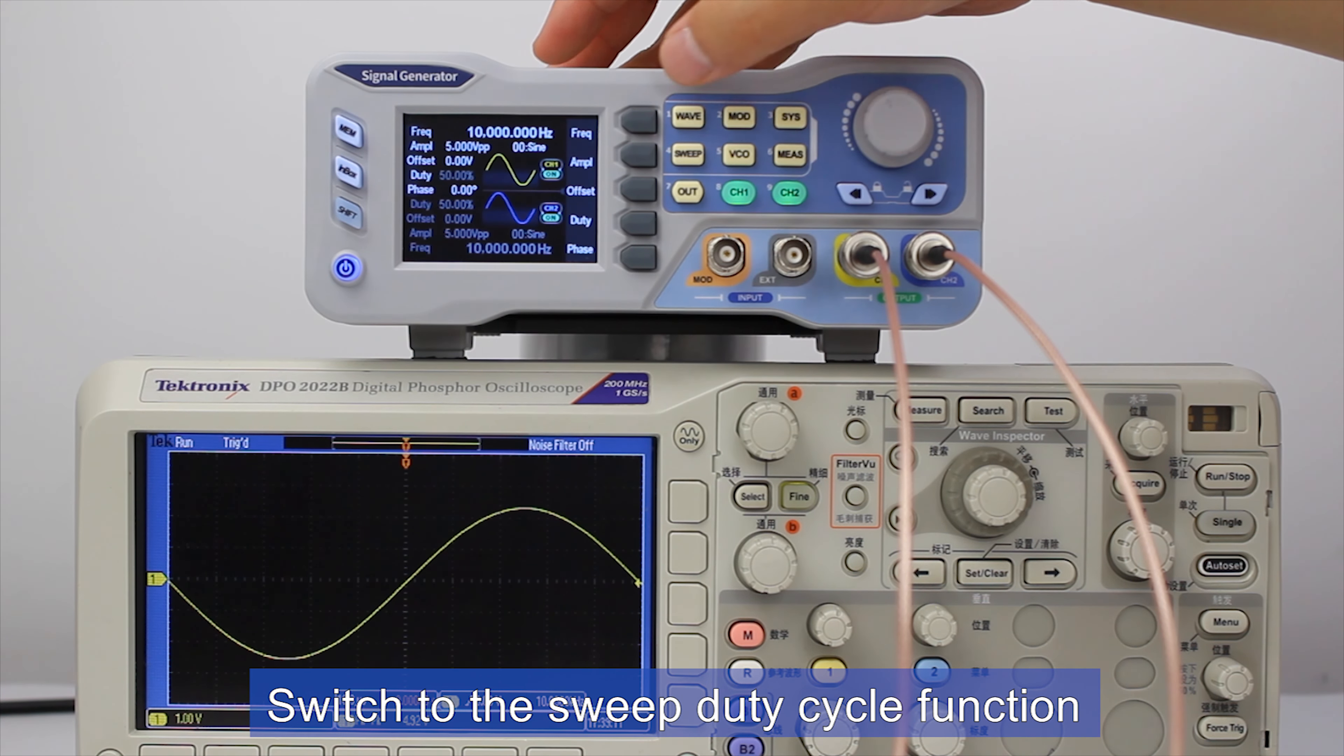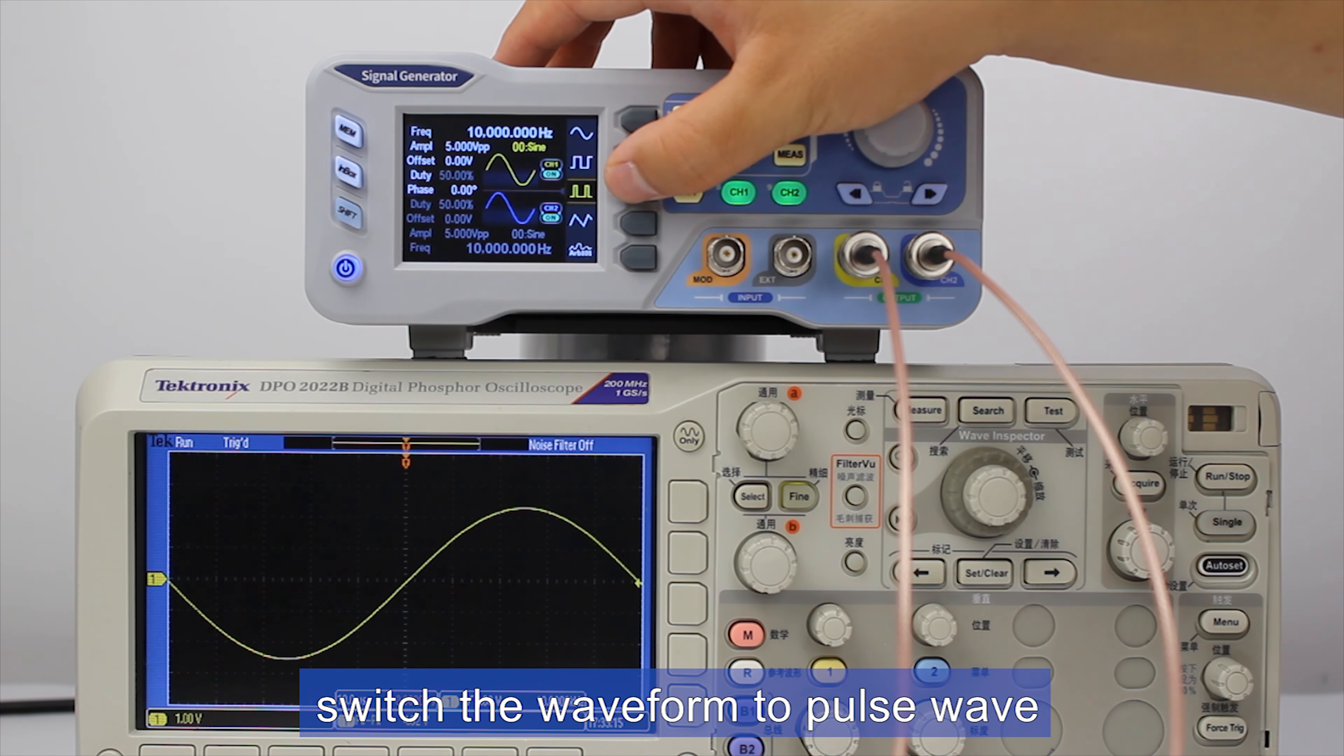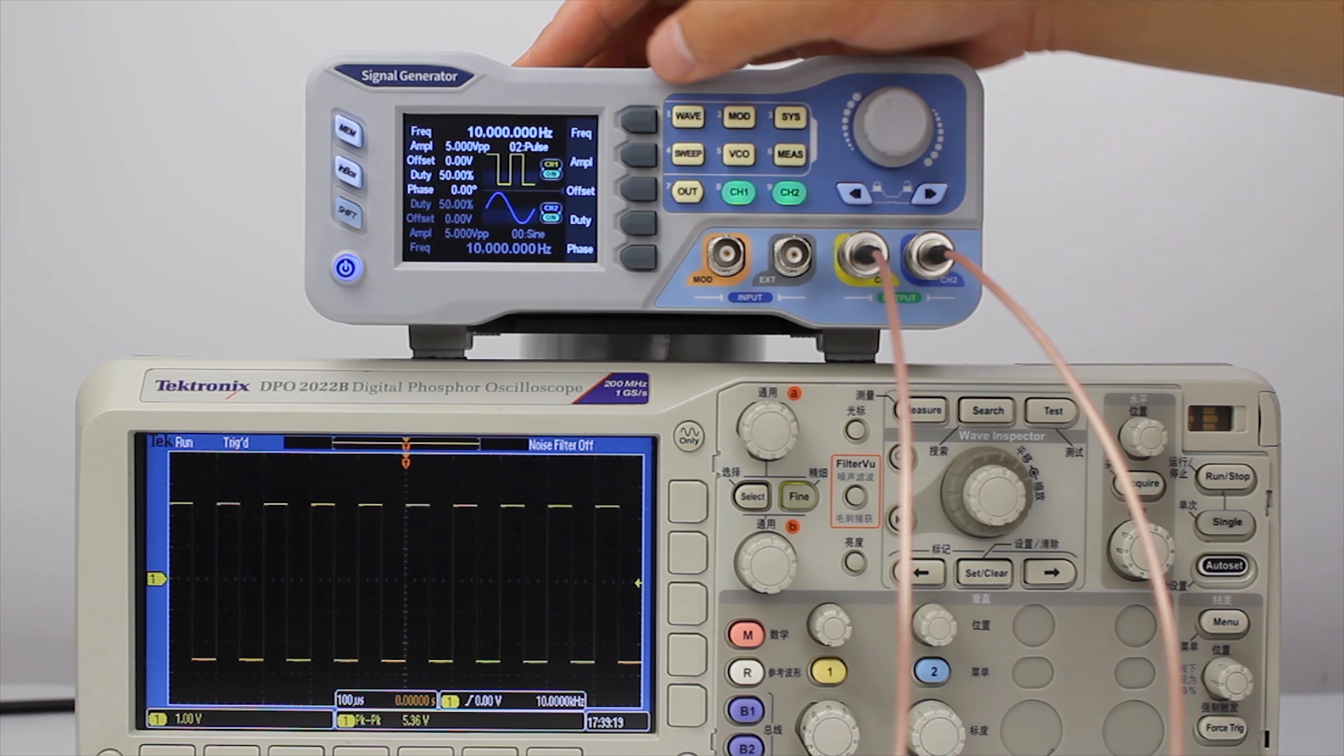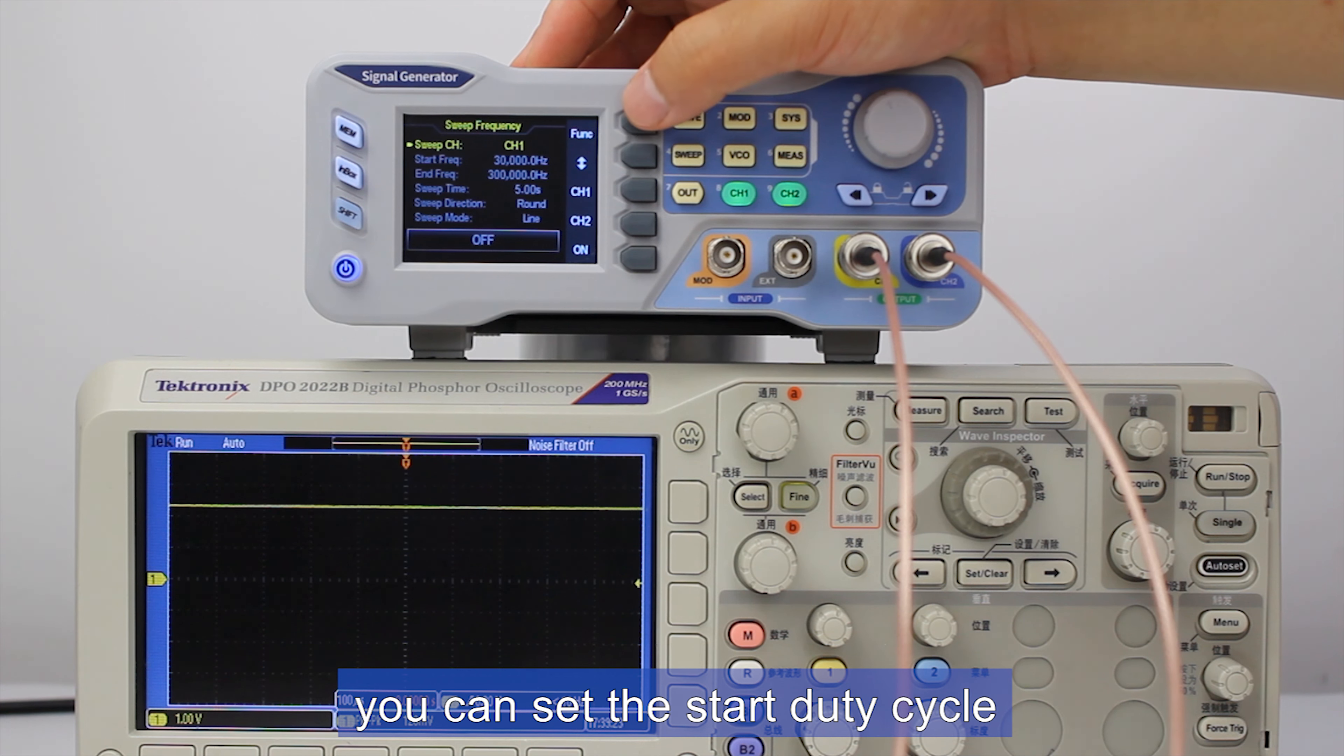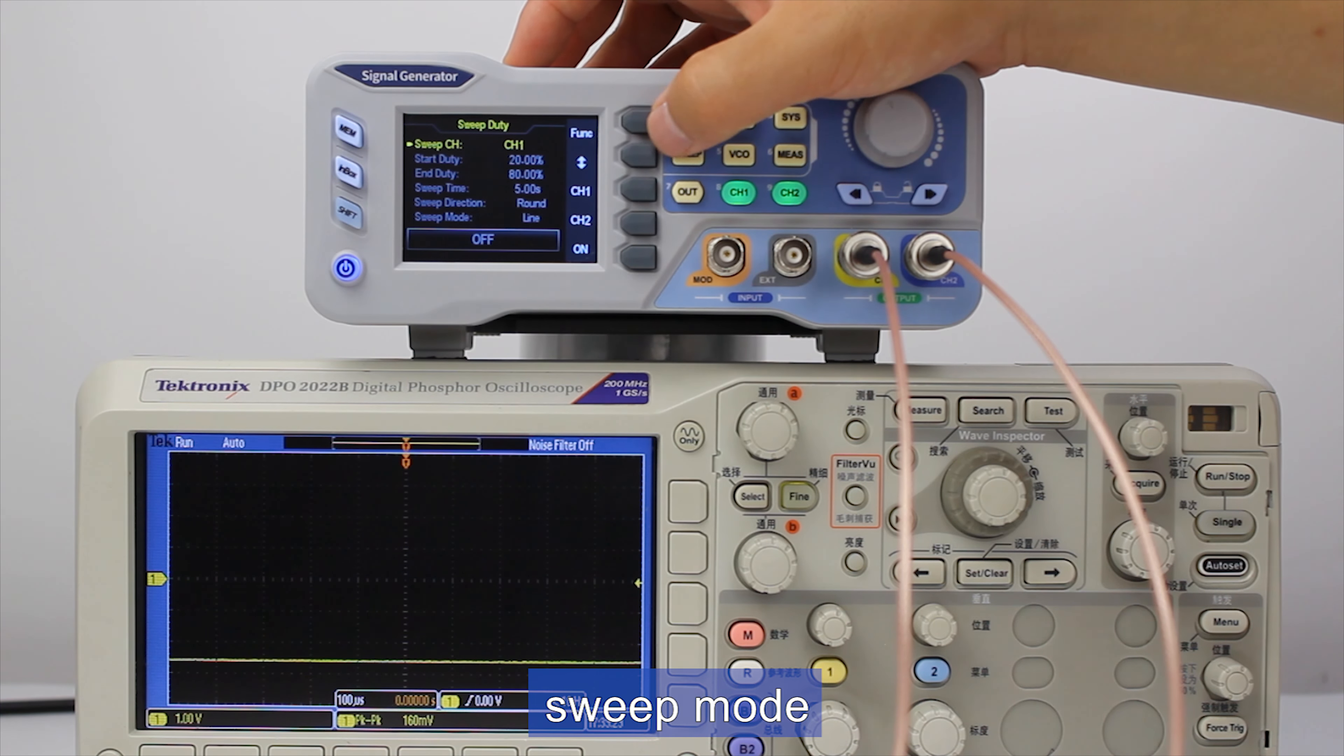Switch to the sweep duty cycle function. Switch the waveform to pulse wave. You can set the start duty cycle, end point duty cycle, sweep time, sweep direction, and sweep mode.